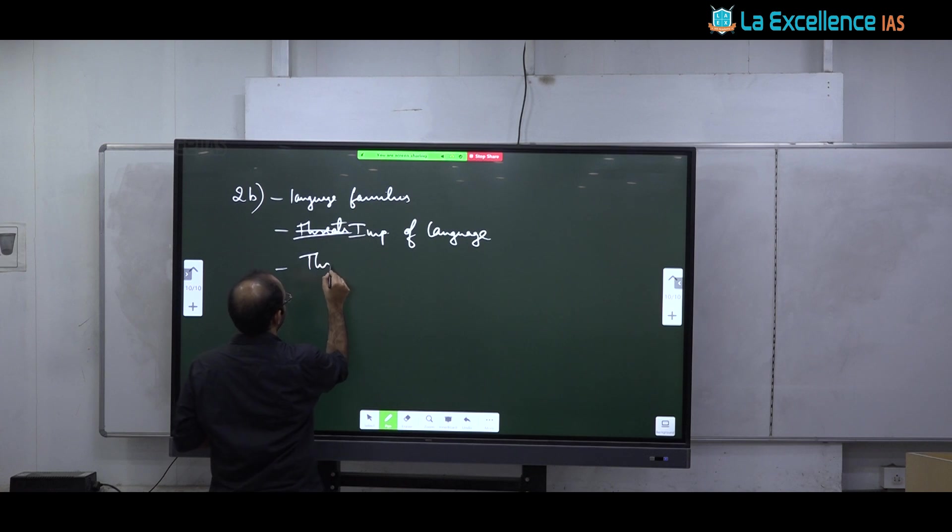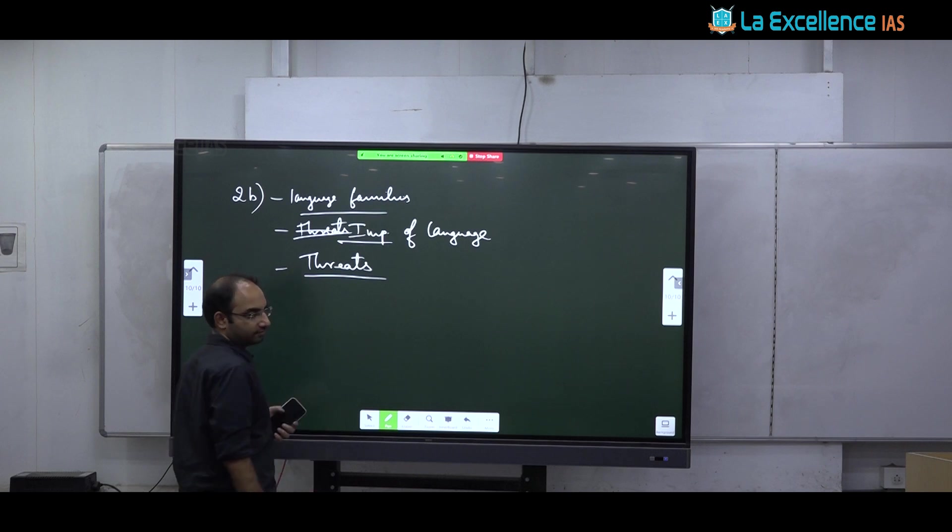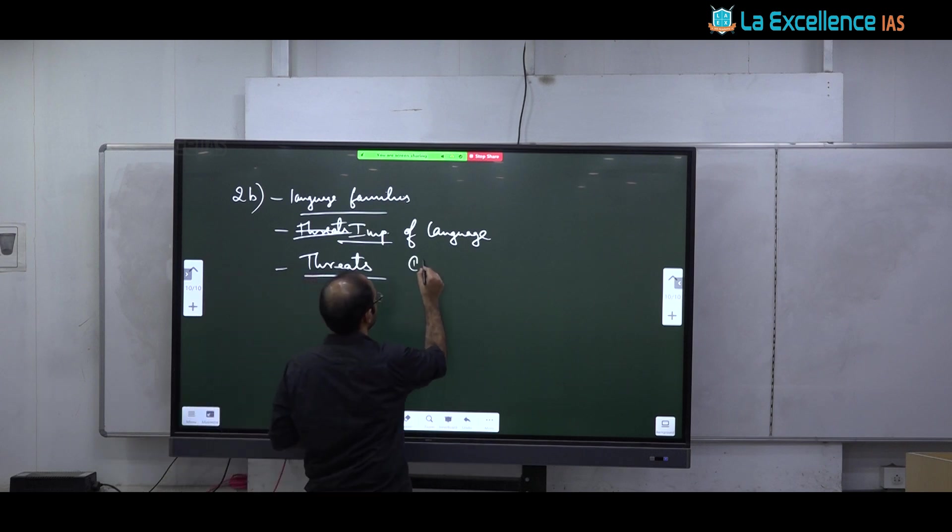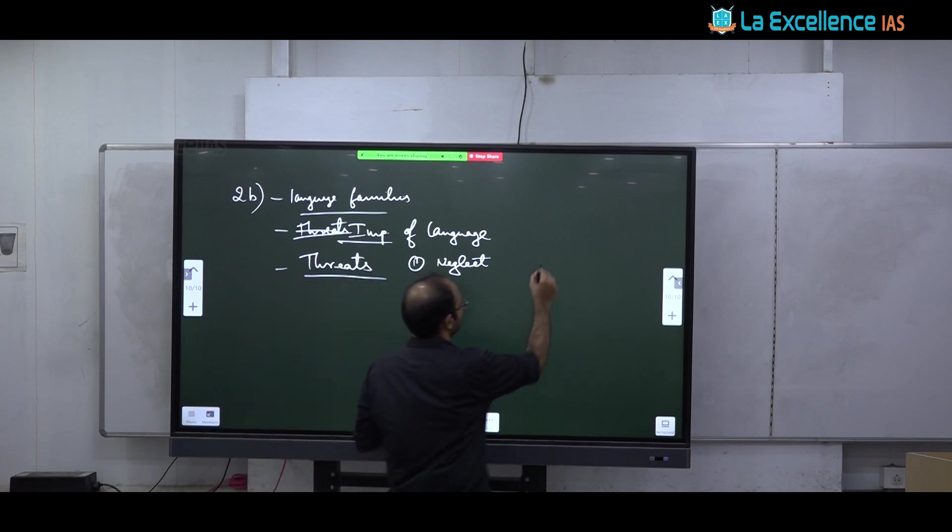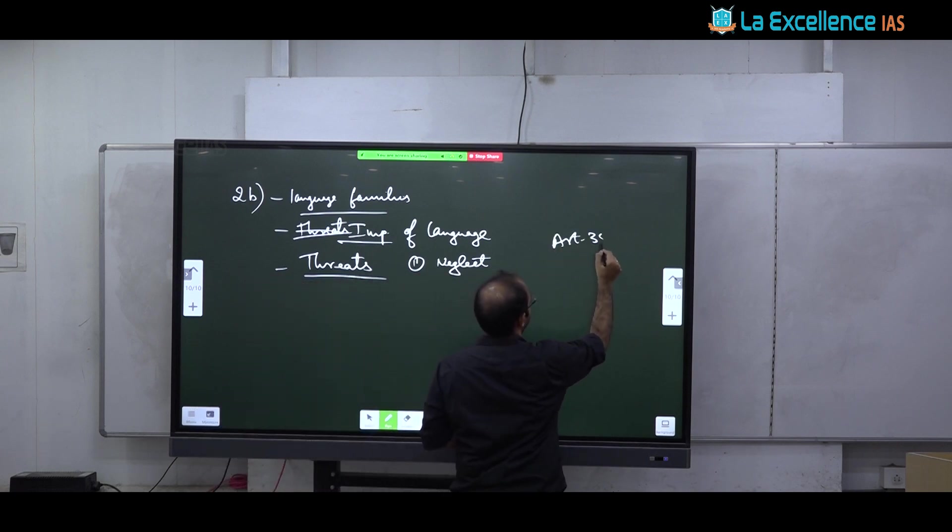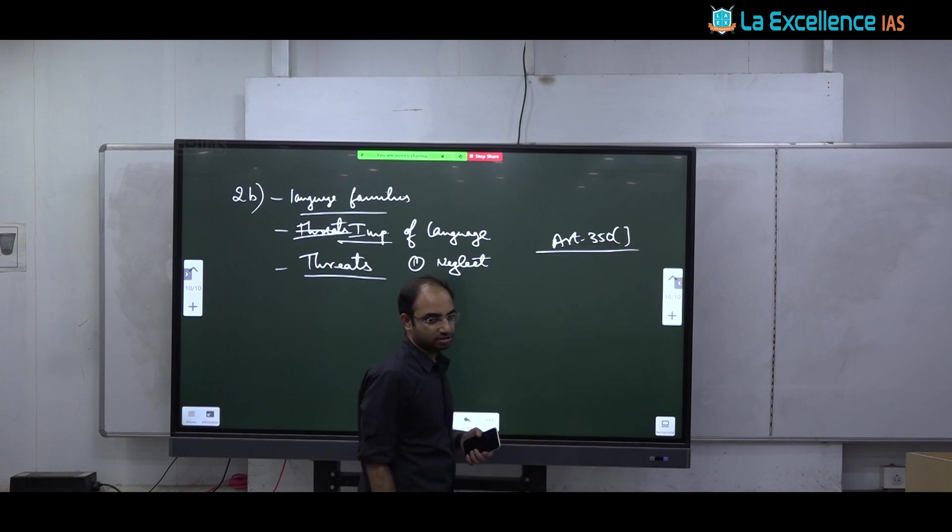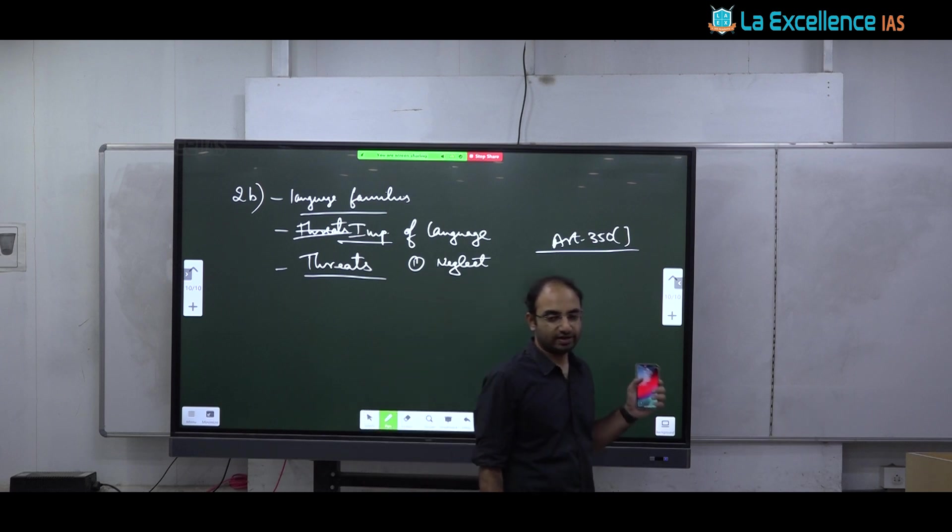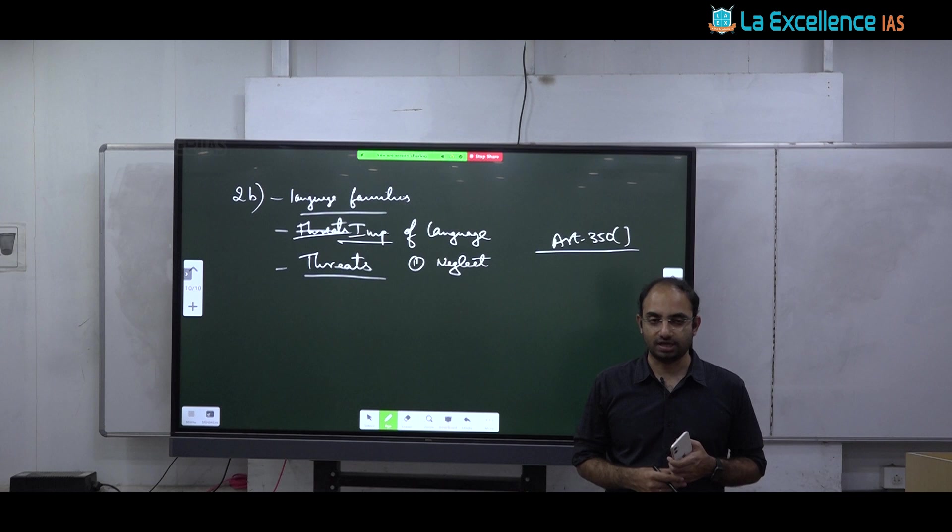Language is very important because one language is a marker of culture. Through language they direct their identity. Language also involves indigenous knowledge. And language is necessary for their empowerment in terms of education and also in terms of participation in economy and administration. So that is the importance of language. Next, do not directly come to threats. So you should be able to in paper 2 you need to develop frameworks like this. What is the language family? What is the importance of language? Next, what are the threats faced by them?